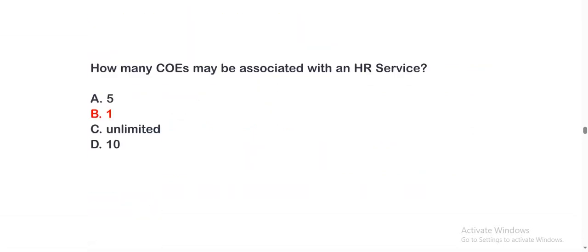How many COEs may be associated with an HR service? Option A: 5. Option B: 1. Option C: unlimited. Option D: 10. The correct option is B.